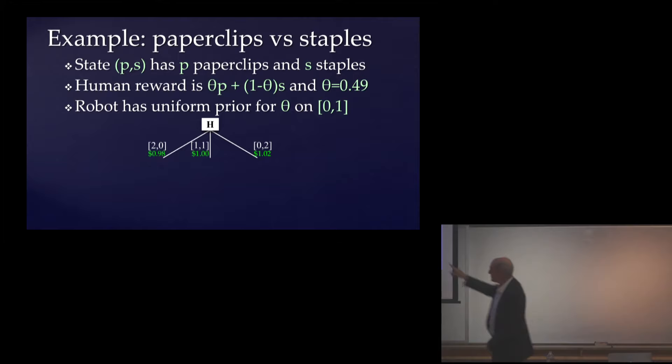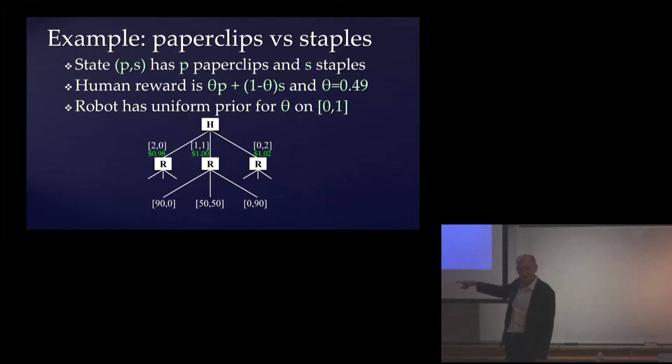If the human was just by themselves, what would they do? Well, paperclip is worth 49 cents, staple is worth 51 cents, they would make two staples. Because that's worth a dollar two. In this game, after the human has done their thing, the robot gets to make 90 paperclips, 50 of each, or 90 staples. So now what should the human do? Well, what the human should do depends on how the robot is going to interpret what the human does. Because the human would like the robot to make whichever of these things is going to make the human happiest. But how does it tell the robot what its value of theta is if the only choice it has is to make two paperclips, one of each, or two staples?